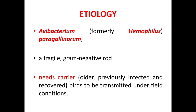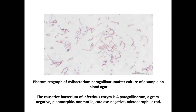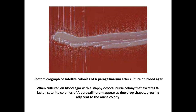Now we will see a photomicrograph of the bacteria Avibacterium paragallinarum after culture of a sample on blood agar. This bacteria is gram-negative, pleomorphic, non-motile, catalase-negative, and a microaerophilic rod. Here is another picture of satellite colonies of Avibacterium paragallinarum on blood agar, cultured with a staphylococcal nurse colony that excretes V factor needed for this bacteria to grow. The satellite colonies appear as dewdrop-shaped colonies growing adjacent to the nurse colony.